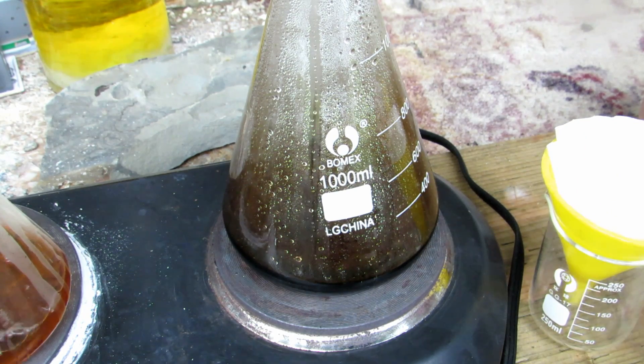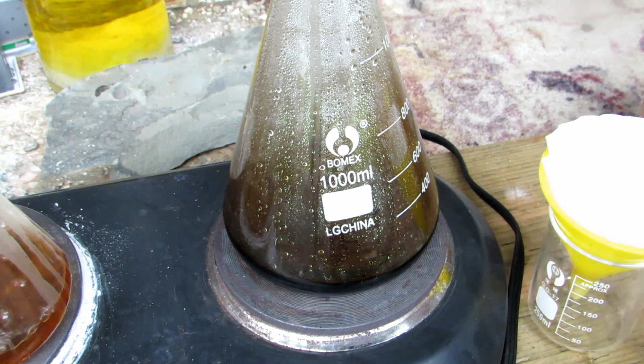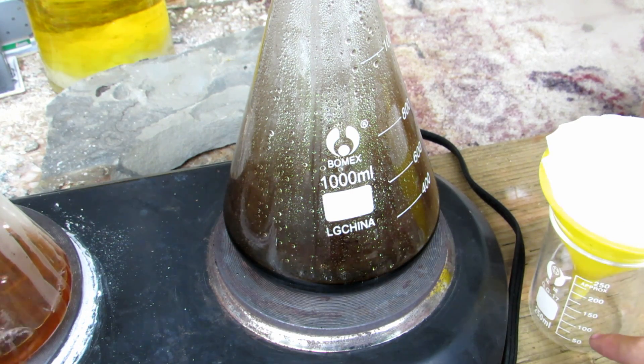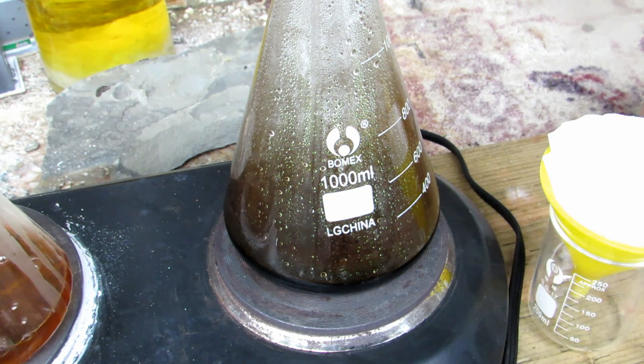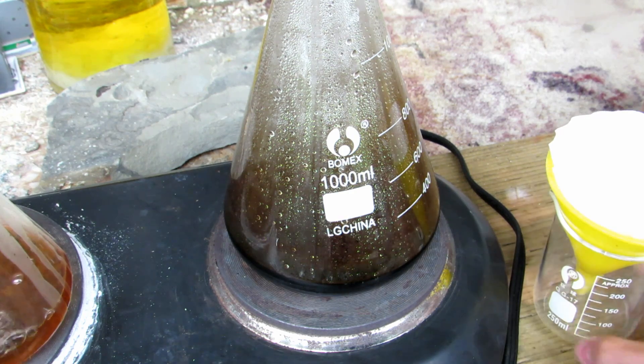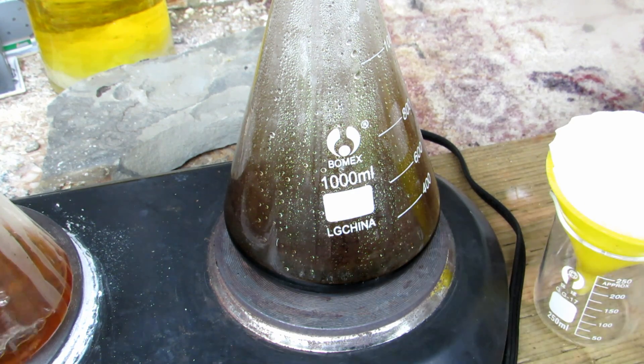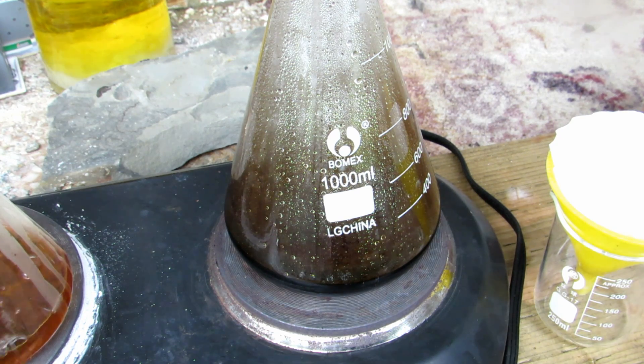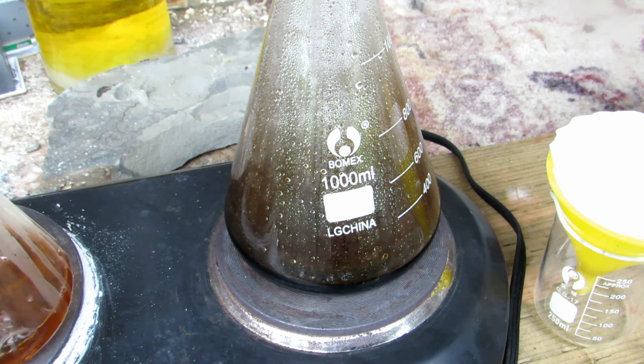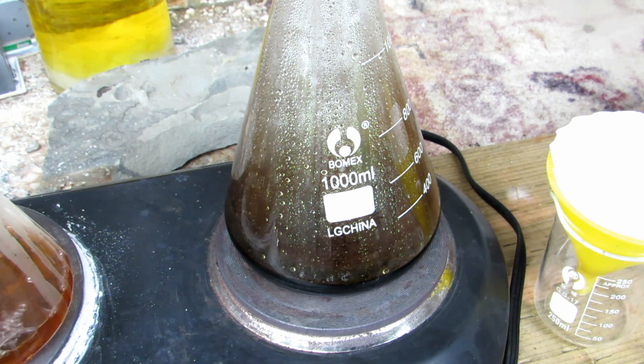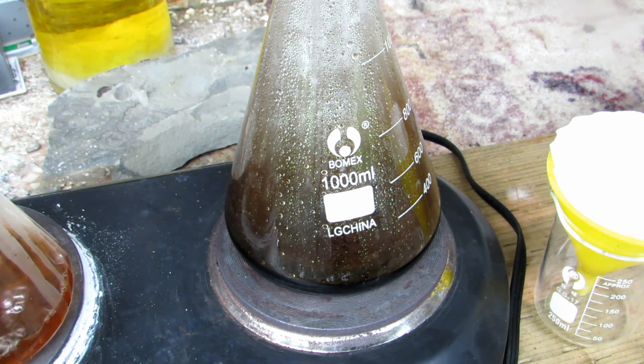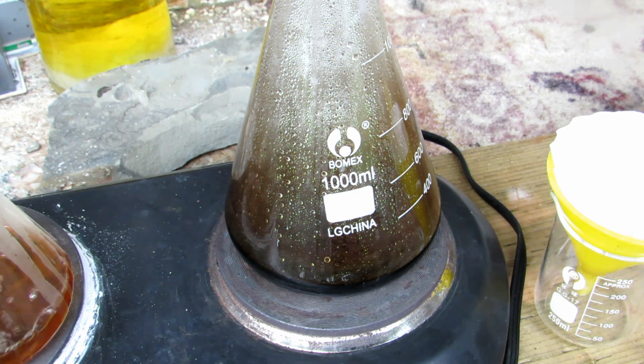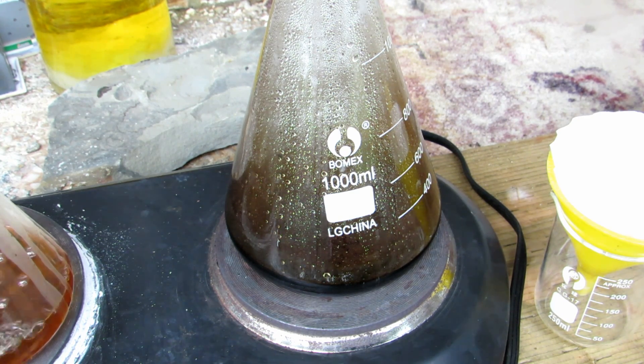We're going to quickly gravity filter it. I'll pour everything into this filter paper here. I'm going to transfer this beaker onto the hot plate once we're done filtering to keep the solution warm. As it filters through and stays warm, hopefully the caffeine will stay in solution. I've decided to use water instead of ethanol because water is easily obtainable. Ethanol can be difficult to obtain for some people, but everyone can obtain water.